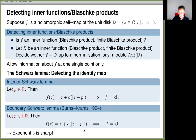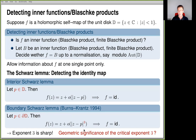What actually bothered us for quite a while is the geometric significance of this critical exponent three. Okay, you can write down this counterexample, but there should be some geometrical reason. We were looking for a reason in terms of hyperbolic geometry. Because of this, we looked again at the conformally invariant version of the Schwarz lemma.